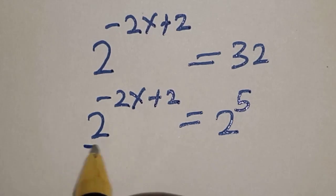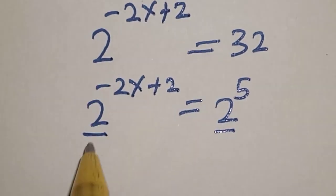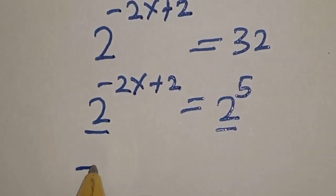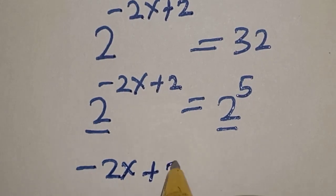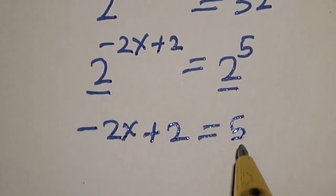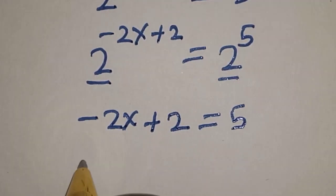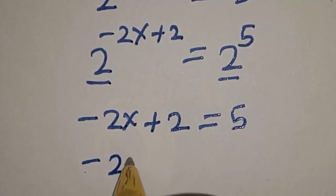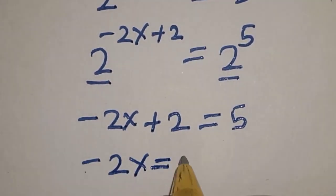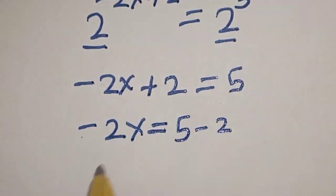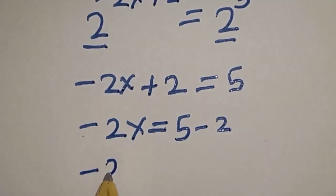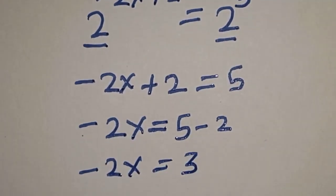They have the same base, so the bases cancel. We have minus 2s plus 2 is equal to 5. This gives minus 2s is equal to 5 minus 2, so minus 2s is equal to 3.